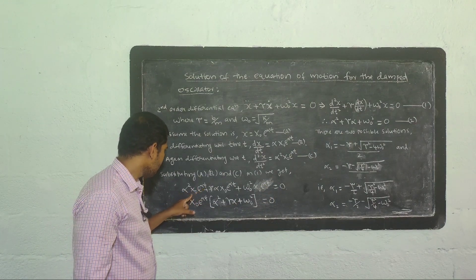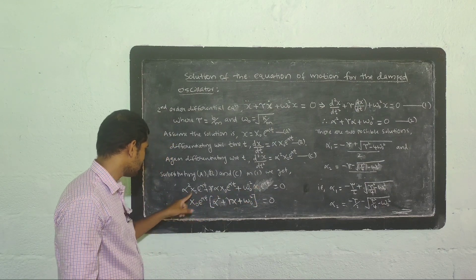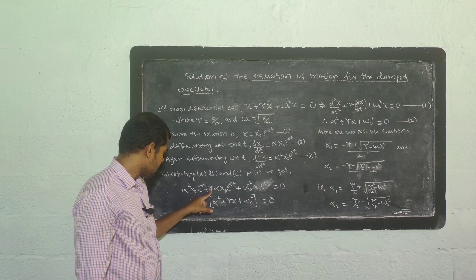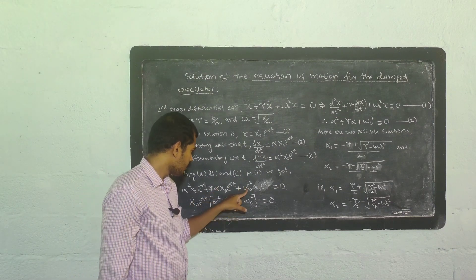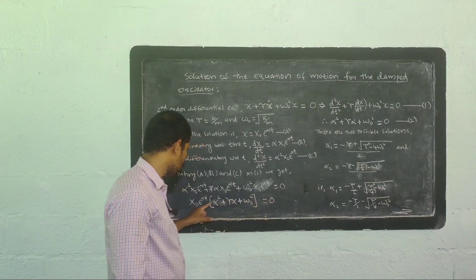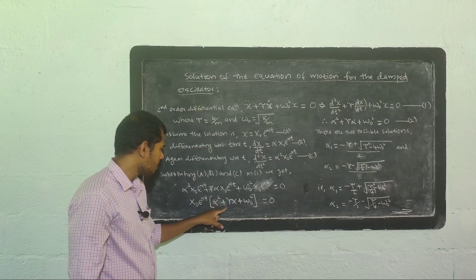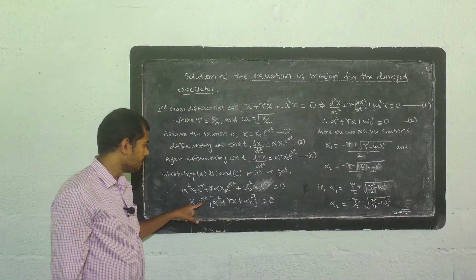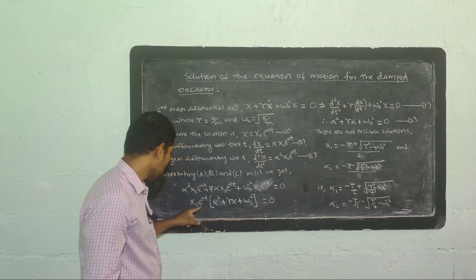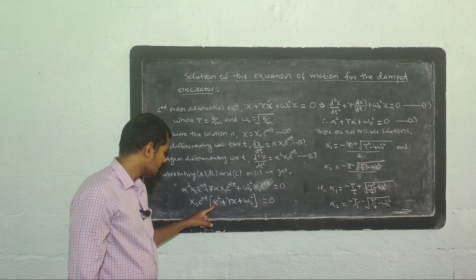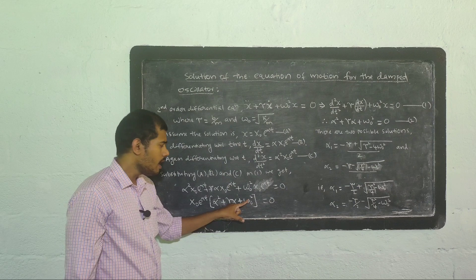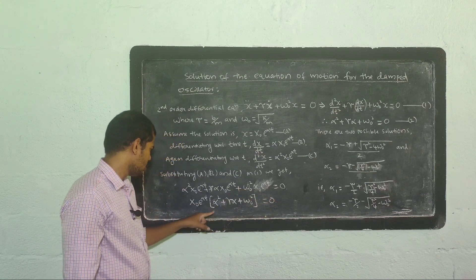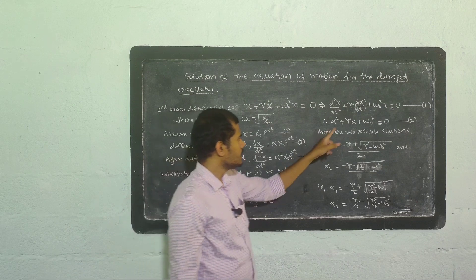Since x₀ e raised to alpha t is common in all three terms, we factor it out: x₀ e raised to alpha t times (alpha squared plus gamma alpha plus omega zero squared) equals zero. Since x₀ e raised to alpha t can never be zero, the term alpha squared plus gamma alpha plus omega zero squared must equal zero. So our characteristic equation is: alpha squared plus gamma alpha plus omega zero squared equals zero.